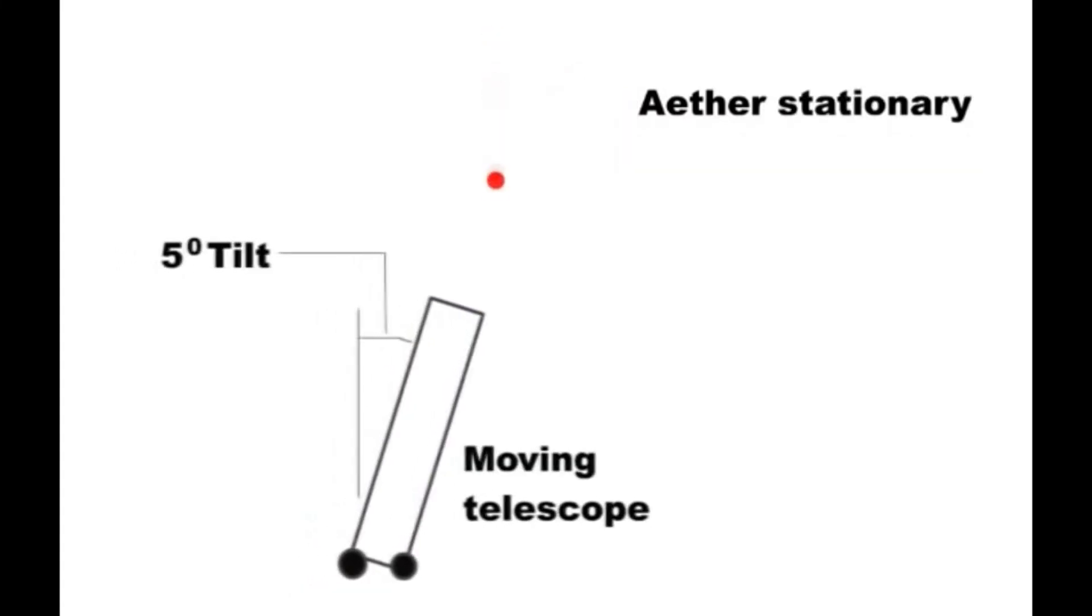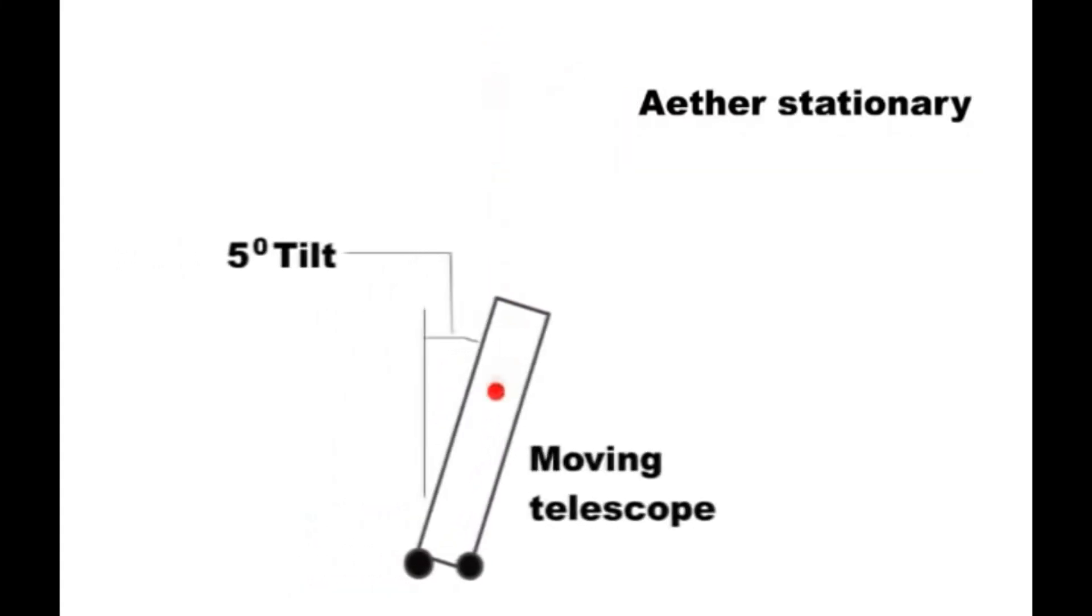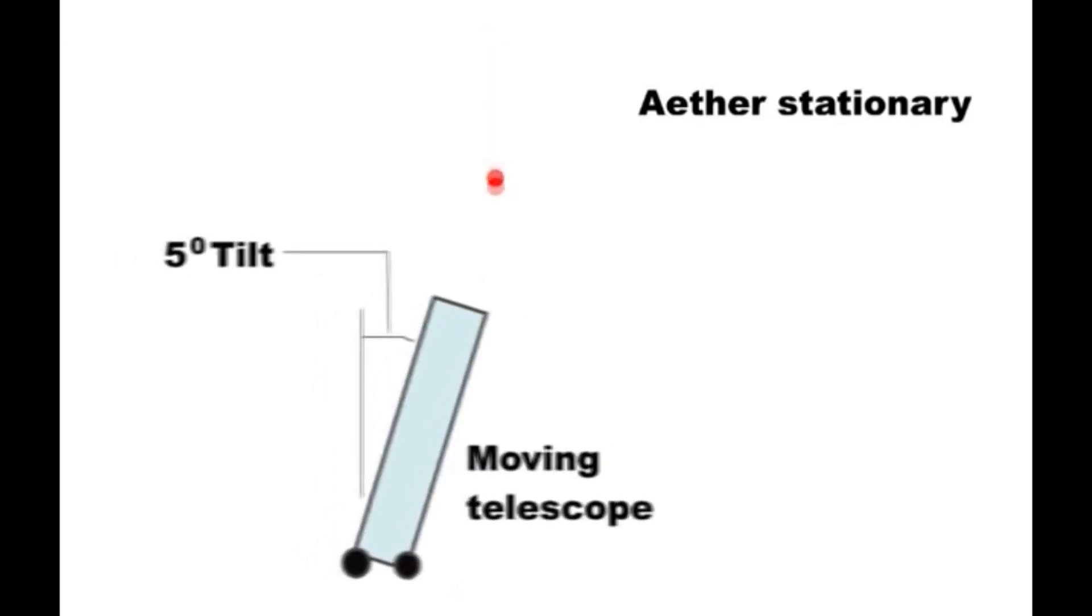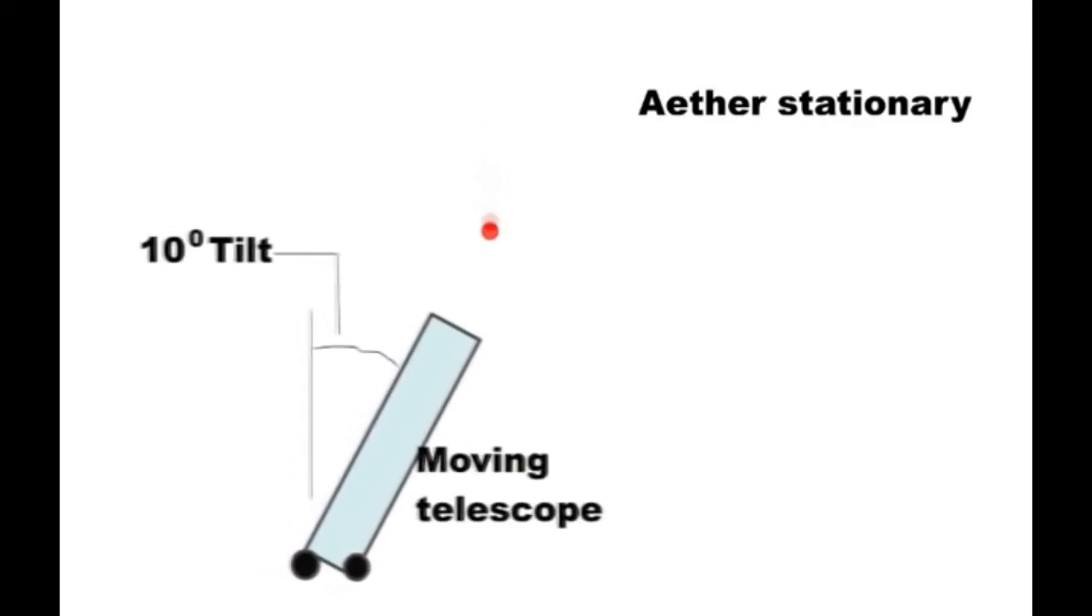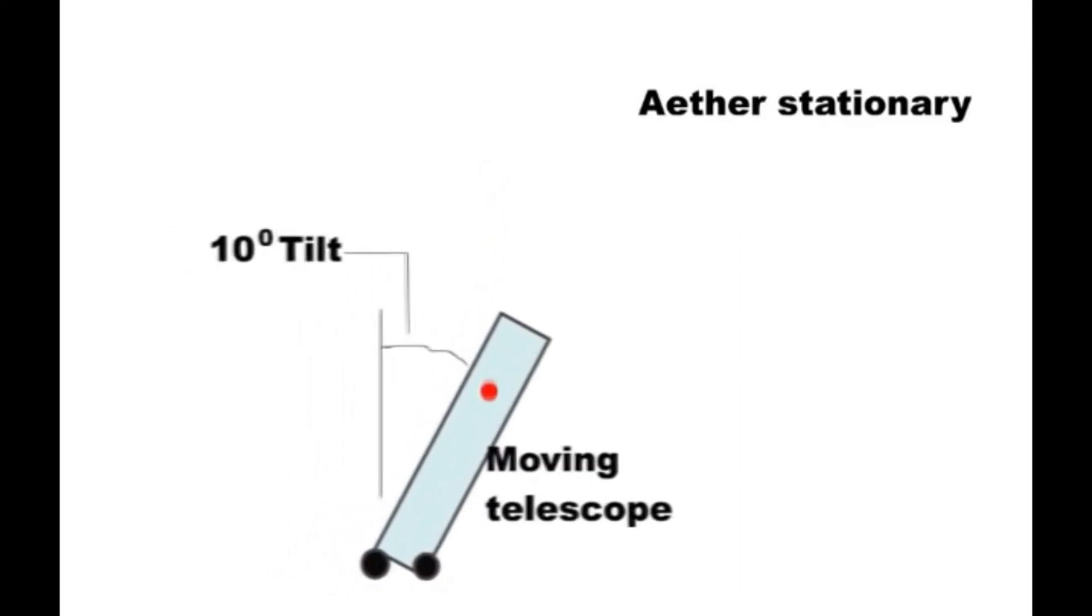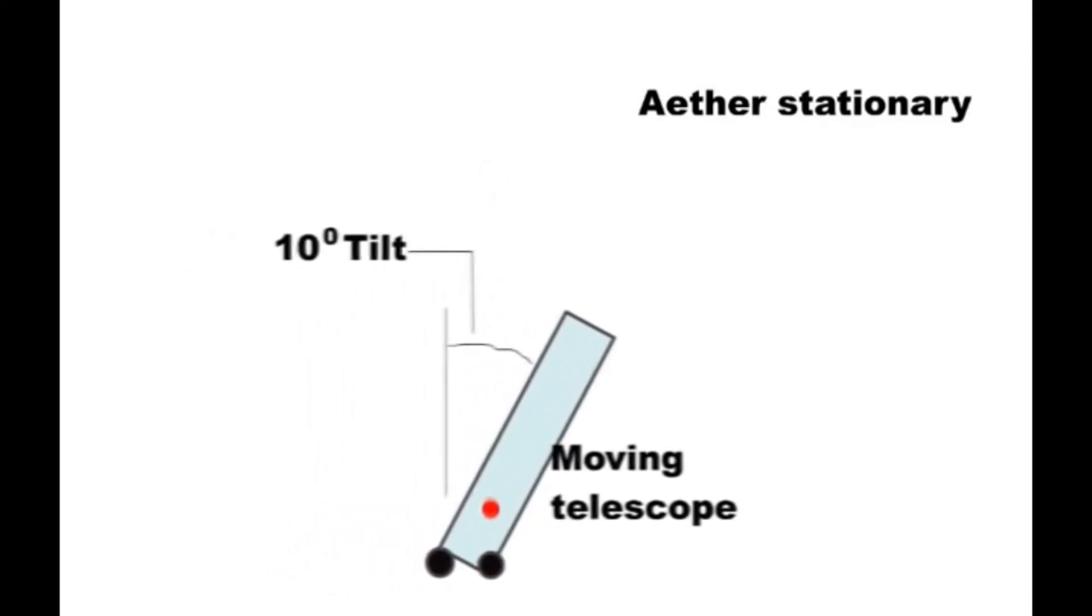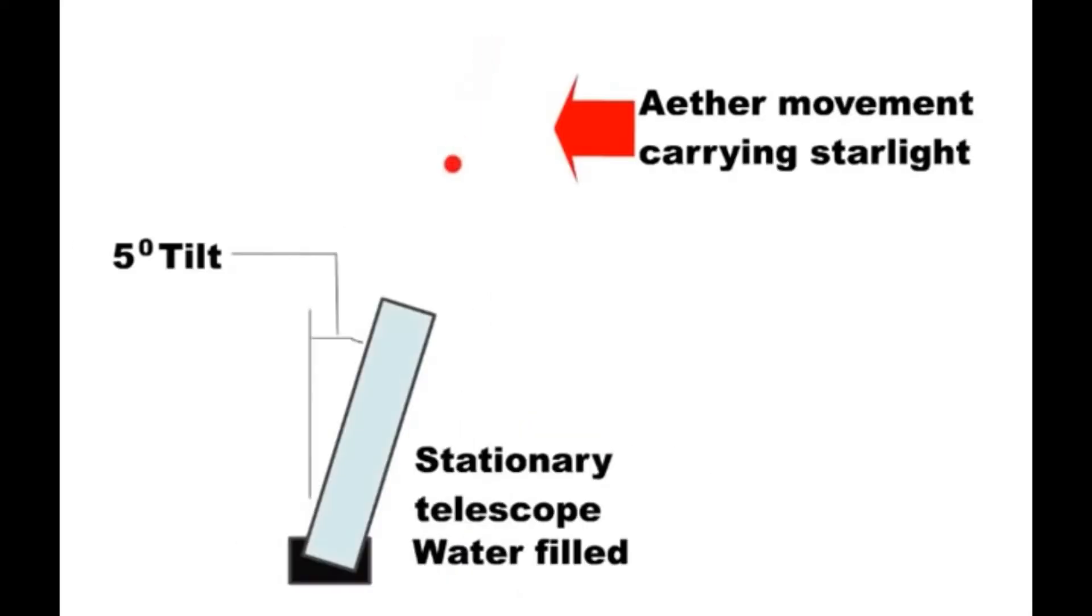To recap, if it is the telescope that is moving, then when it is filled with water, it has to be tipped further to see the star. If the telescope is stationary and the starlight drifting past us, then it does not have to be tipped further.